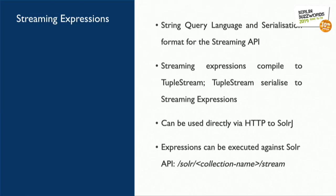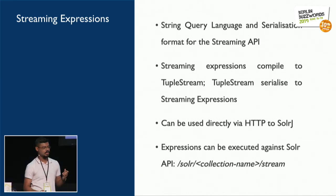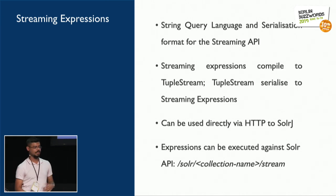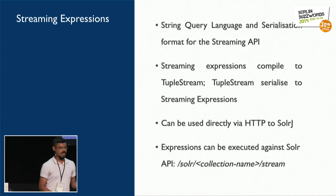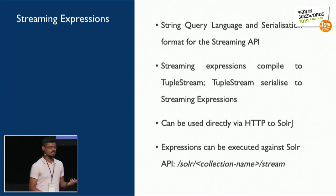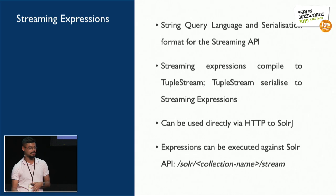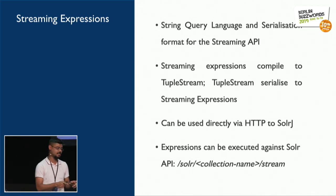To extend the capabilities of the Streaming API to non-Java folks building applications in Ruby, Python, or any other scripting or programming language, streaming expressions were introduced. They are a string query language and the serialized format for the Streaming API. Streaming expressions compile to tuple streams, and vice versa — tuple streams can be serialized back to a streaming expression.